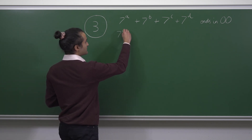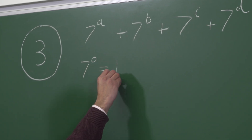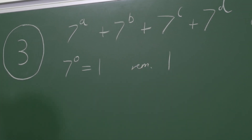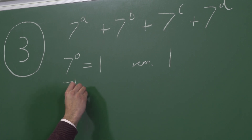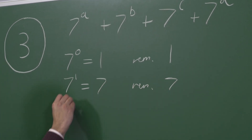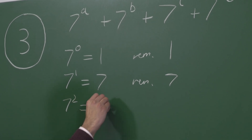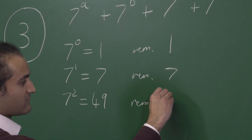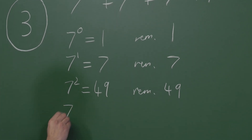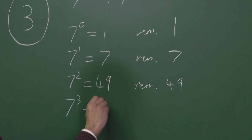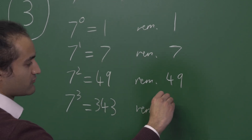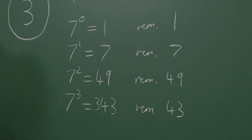If a is zero, 7^0 is 1, which has remainder 1 when divided by 100. 7^1 is 7, with remainder 7. 7^2 is 49, with remainder 49. And 7^3 is 343, which has remainder 43 when divided by 100.